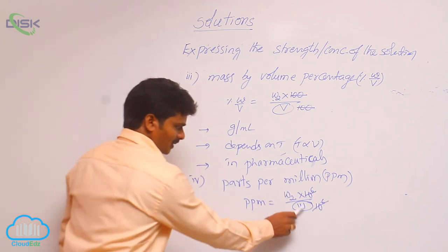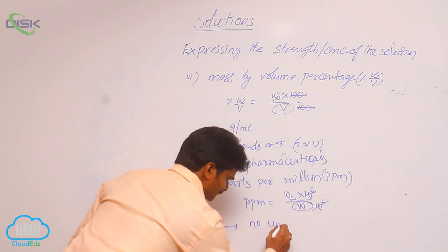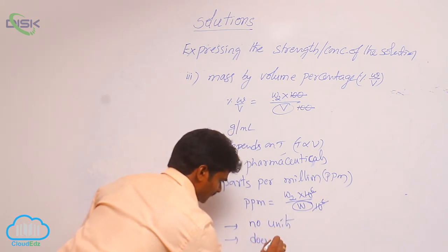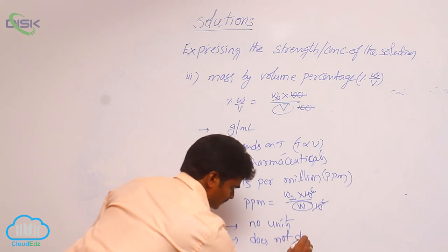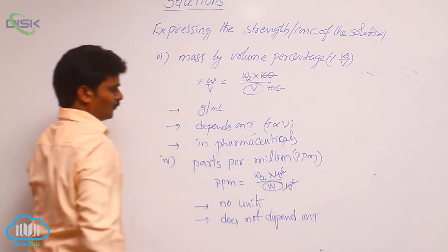Its units, weight by weight relative that means ratio. So, no units. Next, does not depend on T. Why? Because there is no volume term. That is why.